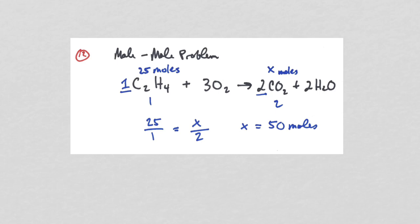Now we're dealing with stoichiometry problems — math problems associated with balanced equations. The setup is a proportion using the coefficients from the balanced equation as your ratio. Put the information given in the problem above the reaction and the coefficients below. Here, given 25 moles and a 1-to-2 coefficient ratio, x over 2 gives 50 moles.